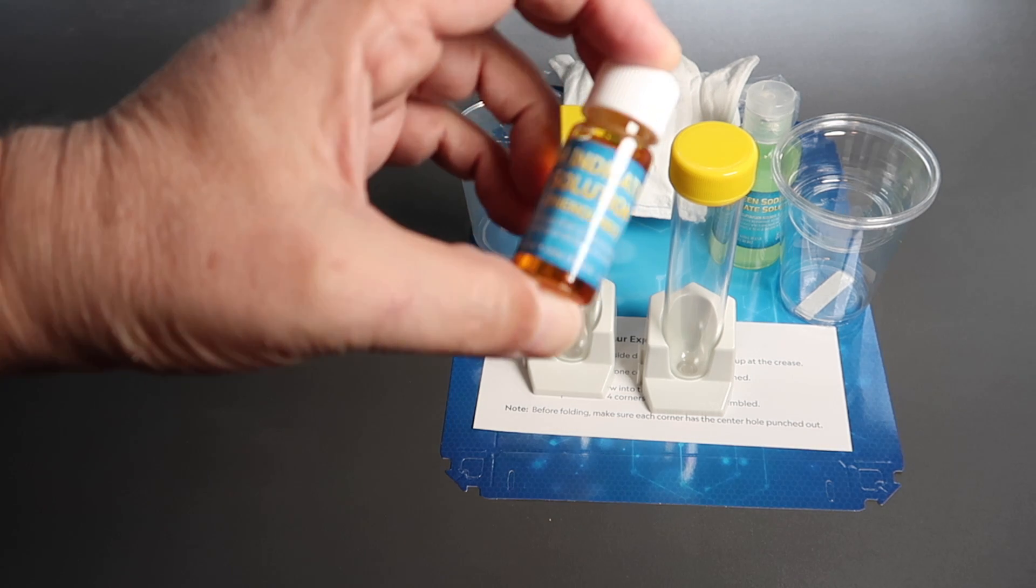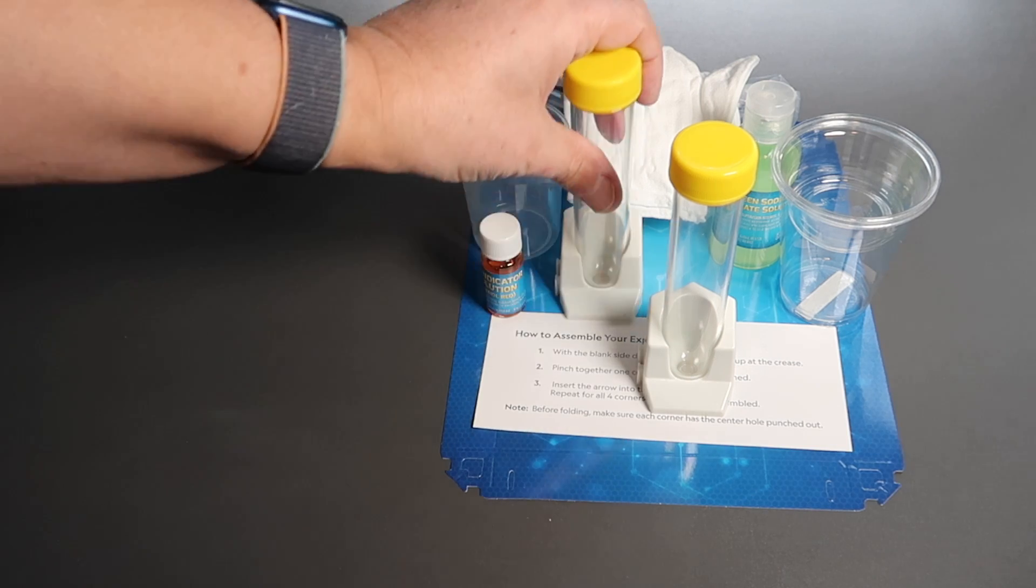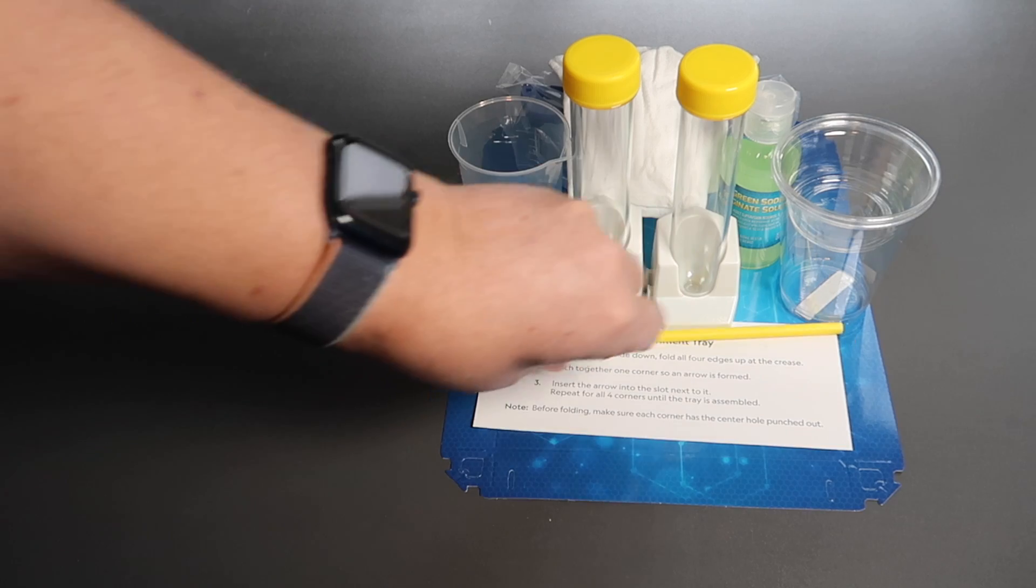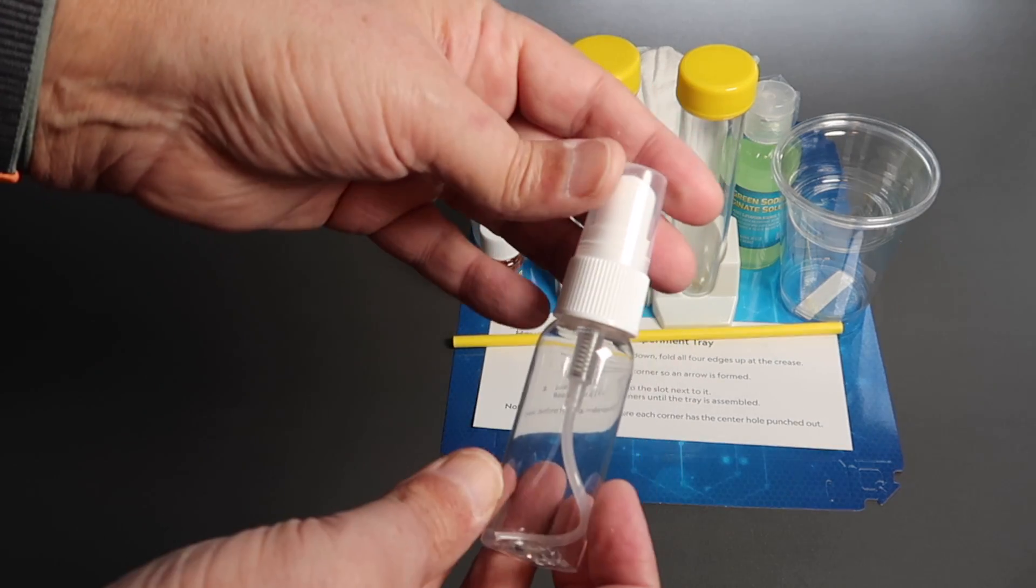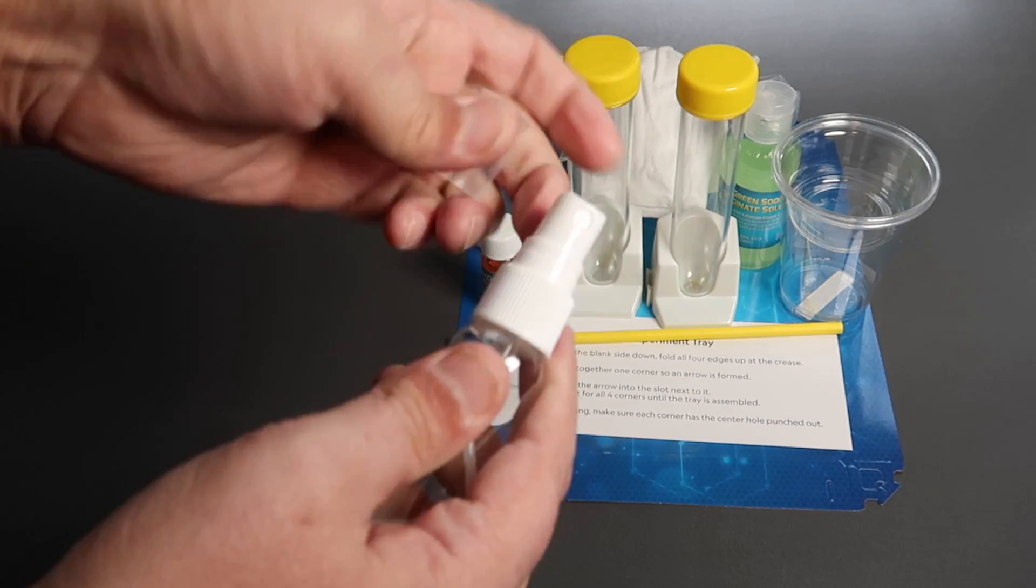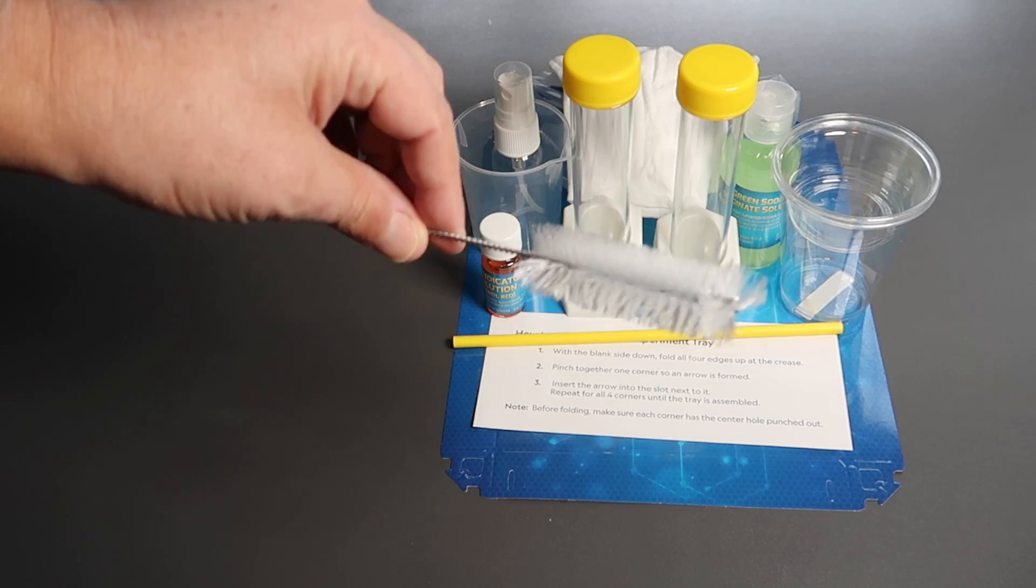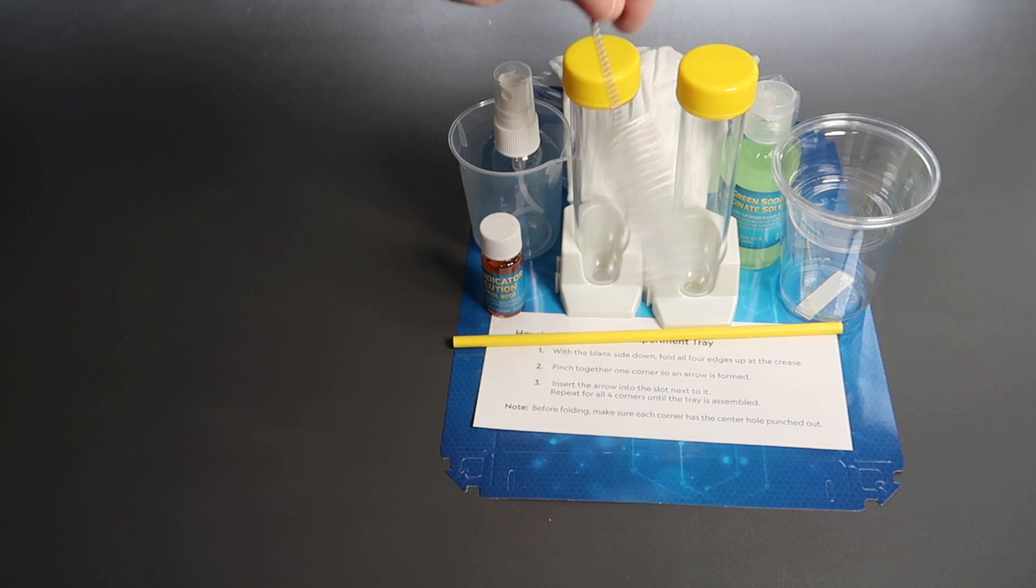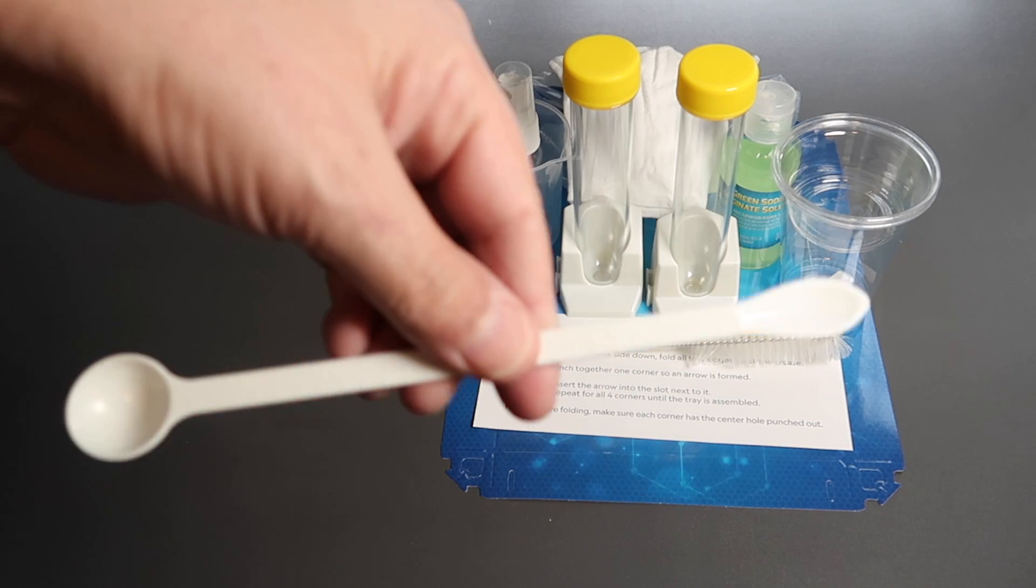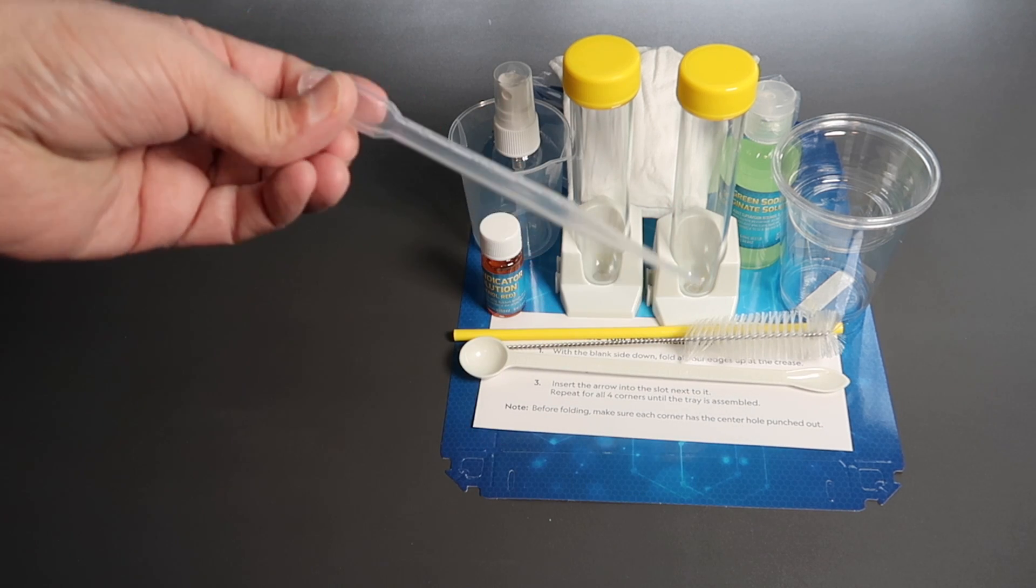pH indicating solution, straw, plastic spray bottle, pipe cleaner for cleaning the test tubes with. They appear to have thought of everything. Double-sided measuring spoon.